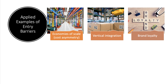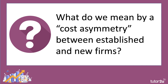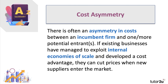Let's think about why economies of scale matter as a barrier to entry and what we mean by cost asymmetry between established and new firms. The cost asymmetry is where the incumbent firm — the existing firm — has lower costs than one or more of their potential entrants. That means if a new firm enters, the established firm might be able to cut prices and make life tough for rivals coming in.